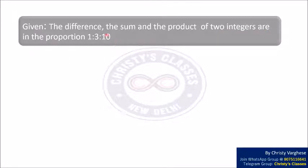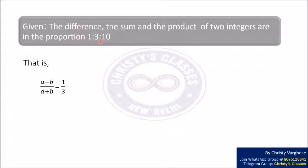From this, we can clearly see that the difference and the sum are in the proportion 1 is to 3. We can write this as A minus B by A plus B equal to 1 by 3, because A minus B is the difference and A plus B is the sum and they are in the proportion 1 is to 3.